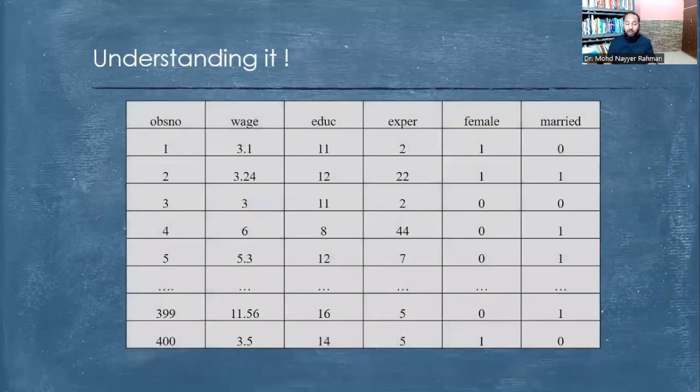Let us understand it with a particular example of how cross-sectional data will look like. We have observations - this may be equal to respondents. Suppose this is person 1, person 2, person 3, person 4, then person 5, and we are taking different characteristics and attributes related to those people. The first person's wage is 3.1, education is 11, educational expenditure, whether male or female (this will be nominal data), whether married or unmarried. We are not mentioning at what time it is because all this data of 400 respondents is for a specific time period - it may be for a month, a year, or a single day.